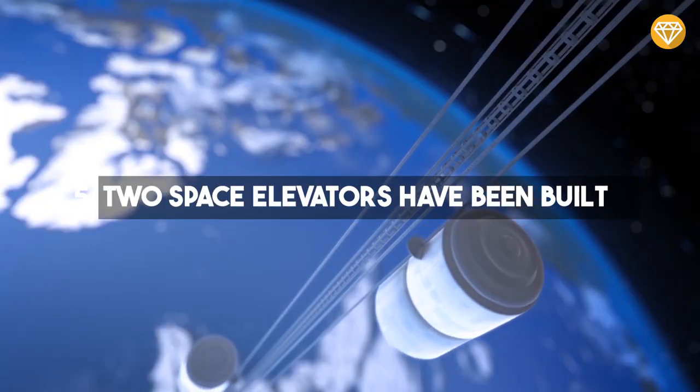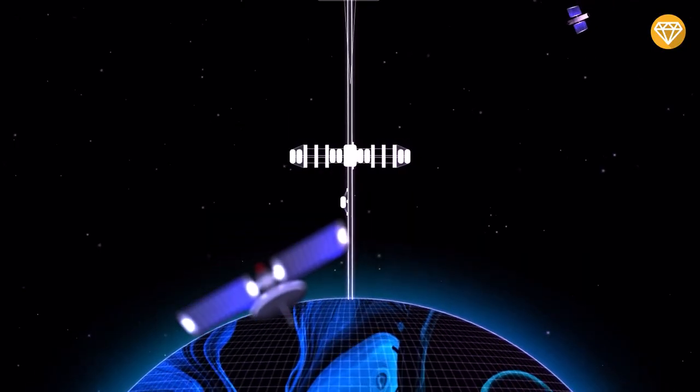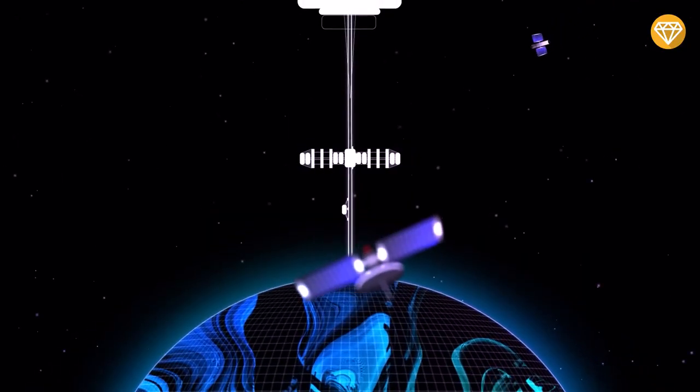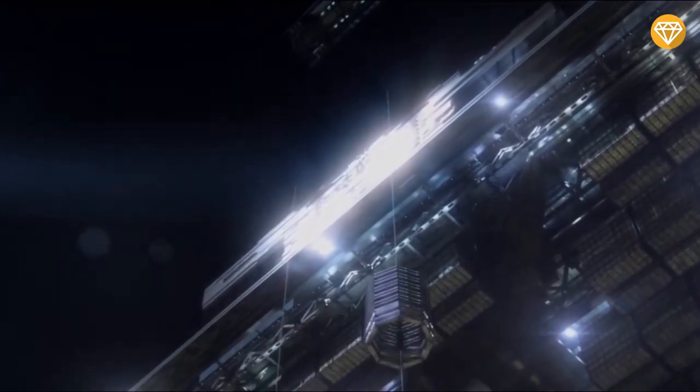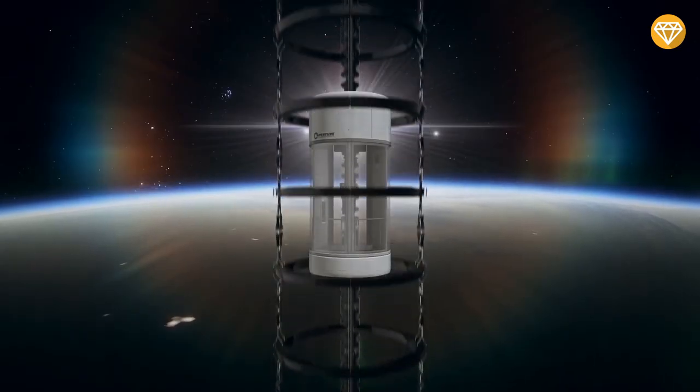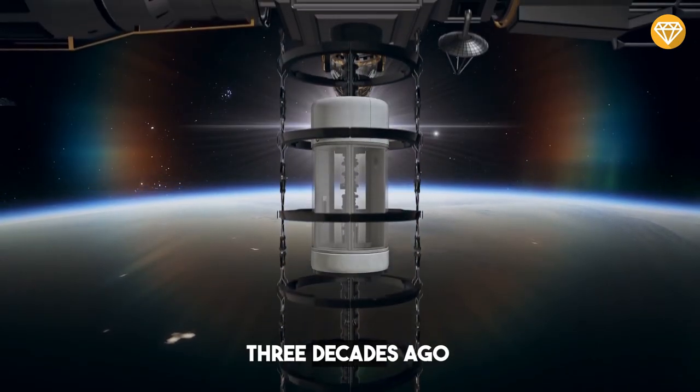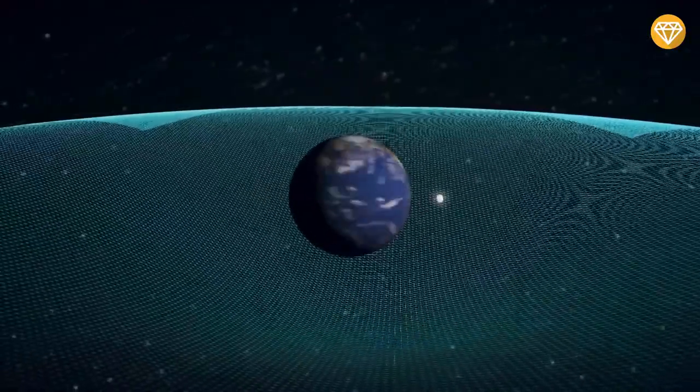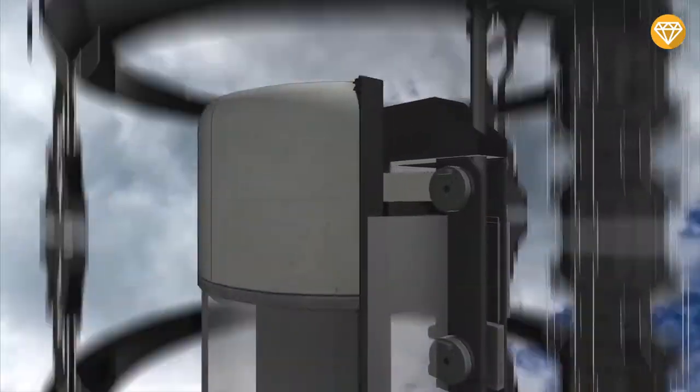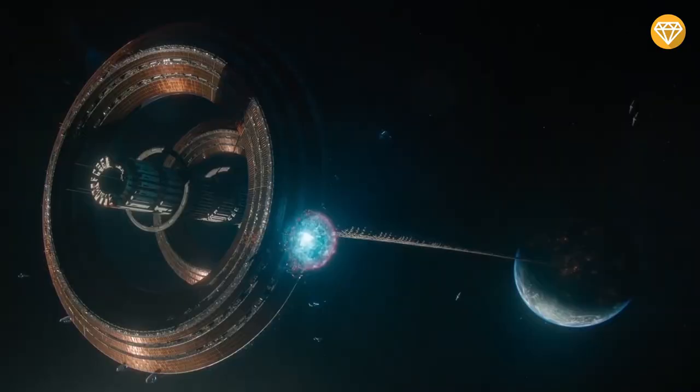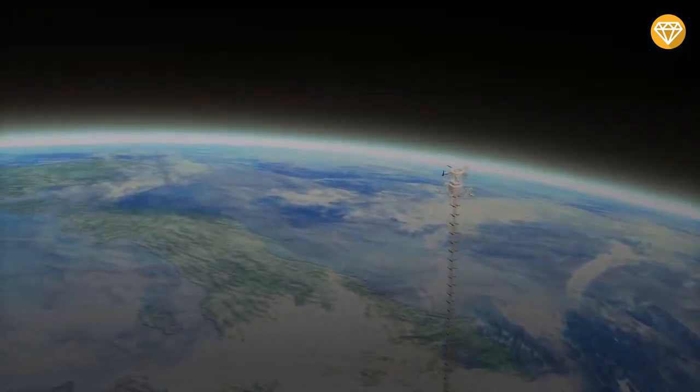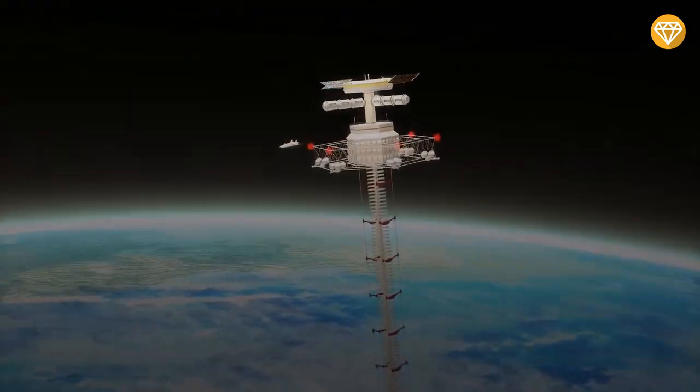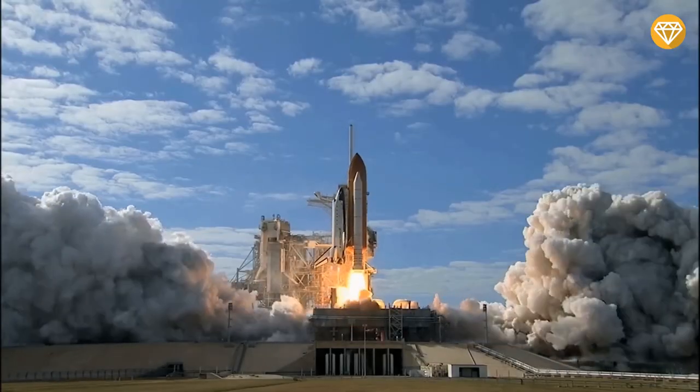Number 5. Two Space Elevators Have Been Built. In 2050, two space elevators have been built, and they're the largest engineering projects ever undertaken. China and the Obayashi Corp, a global construction firm based in Tokyo, Japan, committed to building their own space elevators more than three decades ago, and that vision has come to life. These space elevators are planet-to-space transportation systems that each have a cable anchored to the Earth's surface and extending into space. This design permits an elevator to travel along the cable directly into orbit without the use of large rockets.